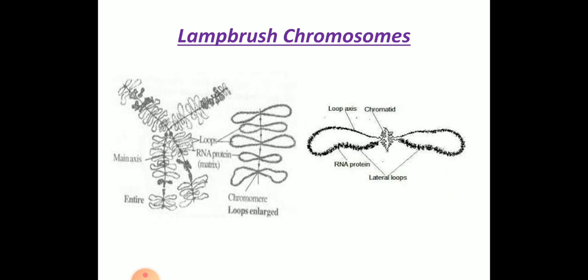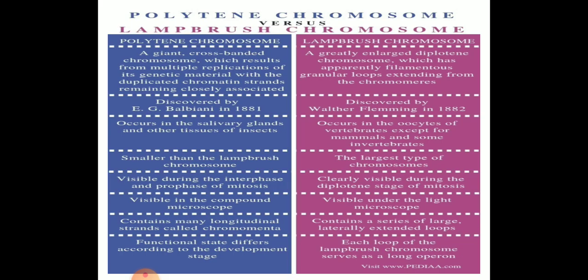The difference between lampbrush chromosomes and polytene chromosomes can be asked for five marks, so please make a note. Each can also be asked individually for five marks with a neat labeled diagram. For seven marks, both giant chromosomes may be asked together.